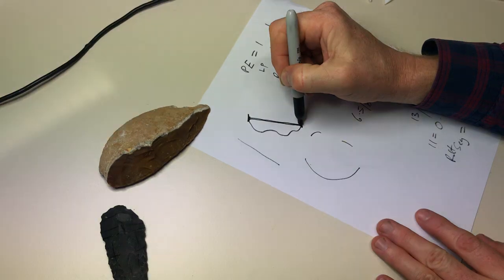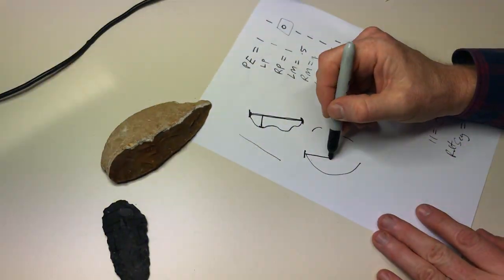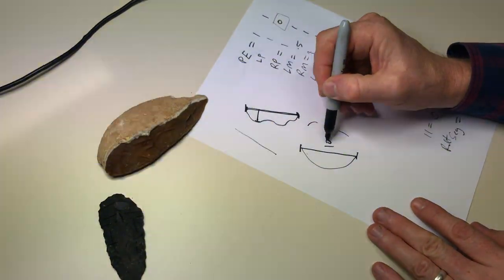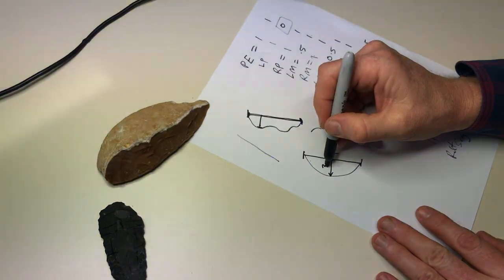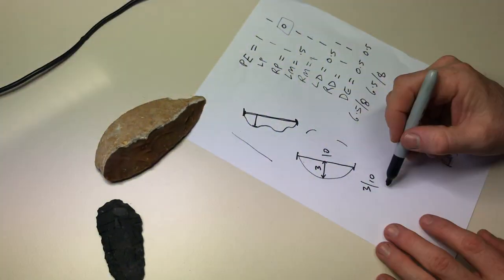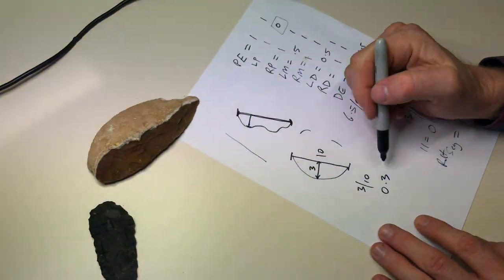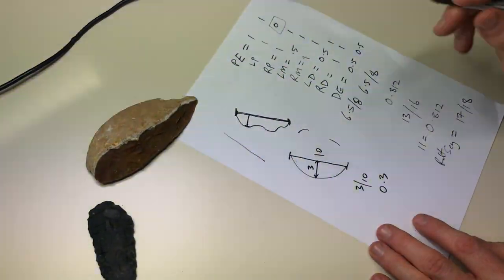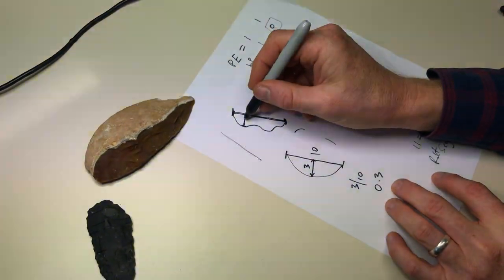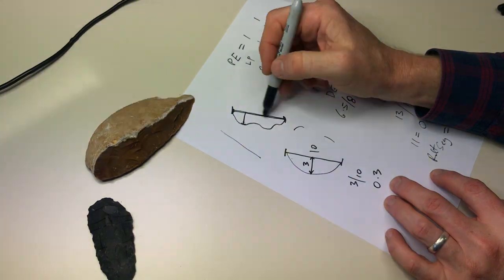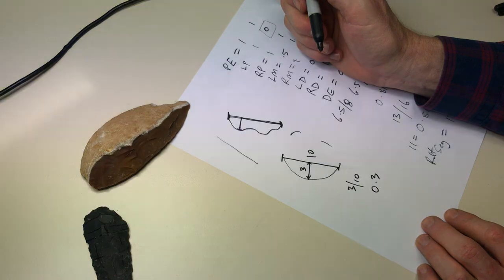And what we can do to measure curvature is we can just take the diameter between one end of the retouch and the other and how far it sticks out. So on this one where it's a simple curved edge, our diameter might be 10 and how much it sticks out might be 3. So 3 divided by 10 tells us that it sticks out about 0.3 or 30% of its diameter. So you'll find the measurements for that under retouch curvature. We've got depth, which is how far it sticks out, and we've got diameter, how long the area of retouch is, and that'll calculate an index of curvature for you as well.